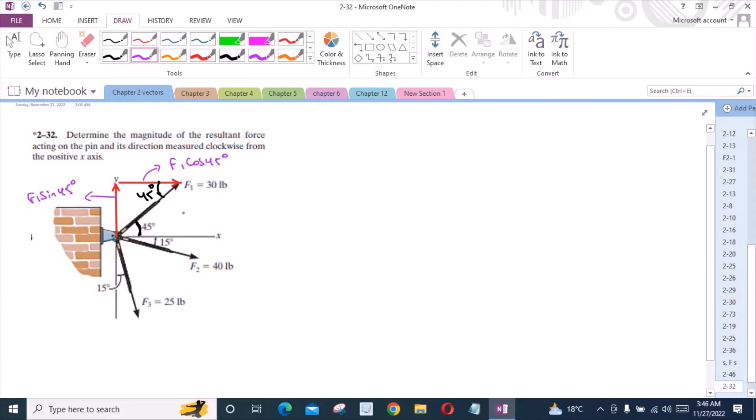Now for the force F2, I have one vertical component acting downwards and one horizontal component. This component right here is F2 cos 15 degrees and this one is F2 sin 15 degrees.